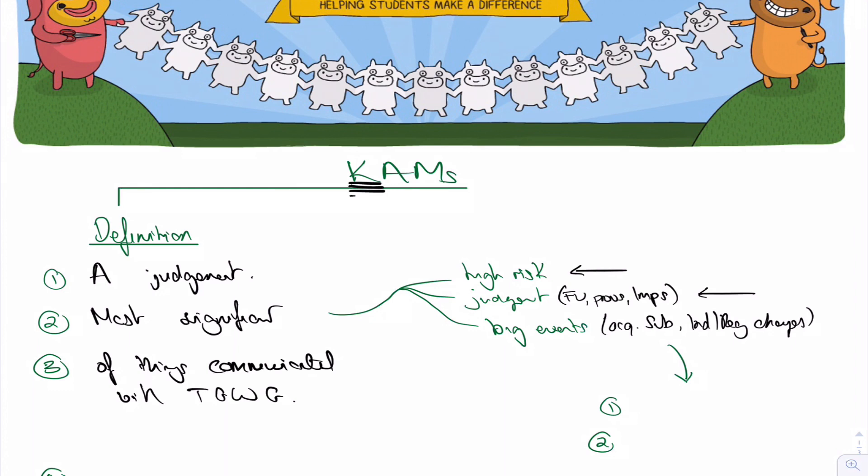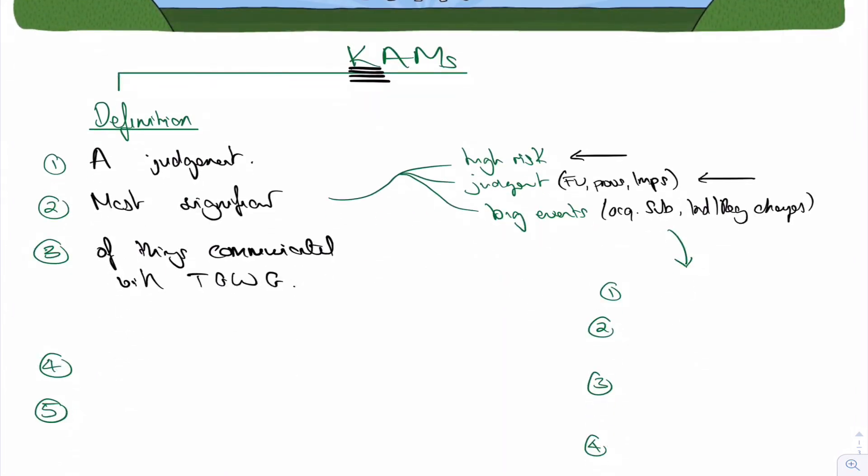It's key audit matters, key significant things. What we also should do is avoid overload. It's not what are all the matters that came up, it's what are the key matters. And you've got to be really specific. You can't just have a template, you can't just say acquiring a sub is a big thing. Might not be, might only be a small thing. So you're not allowed to use templates, it's got to be really specific to the audit that you're doing.